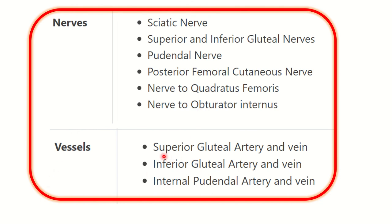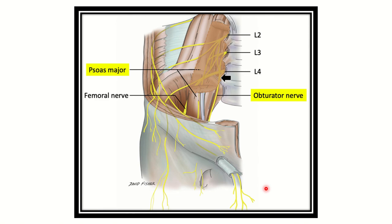The vessels passing through the greater sciatic foramen are: superior gluteal artery and vein, inferior gluteal artery and vein, and internal pudendal artery and vein. This information is also very important.